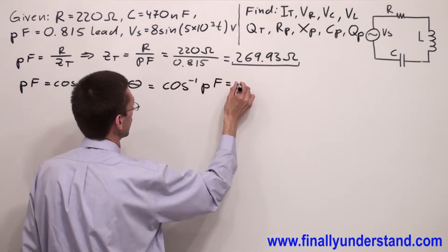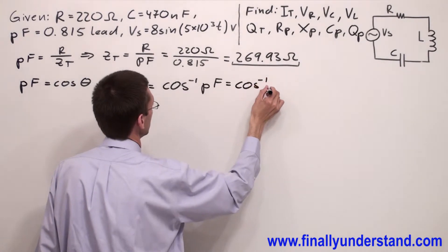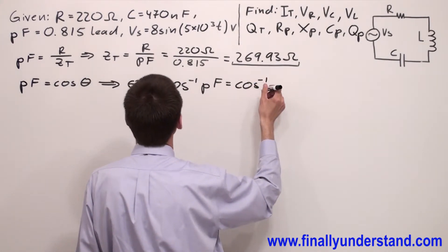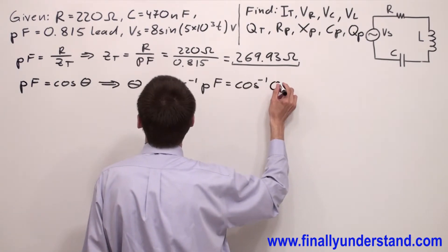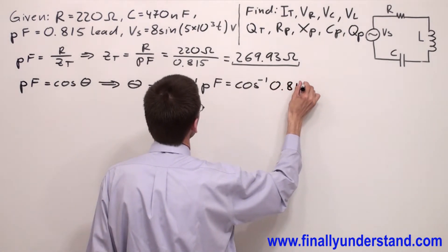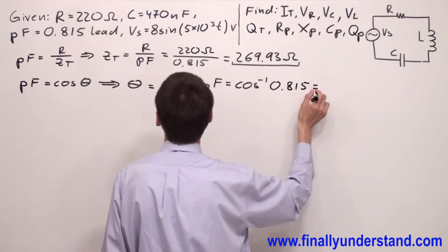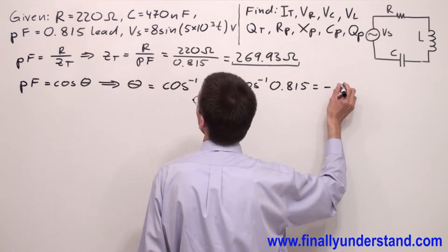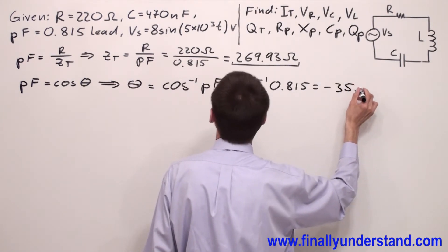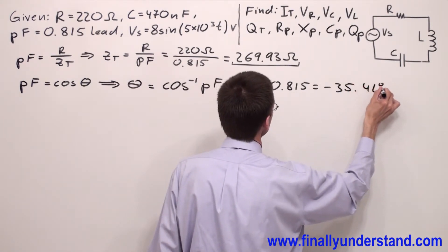It's equal to inverse cosine and I have value 0.815. This is equal to negative 35.41 degrees.